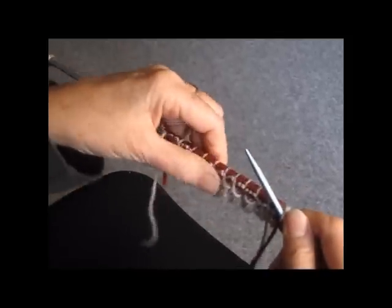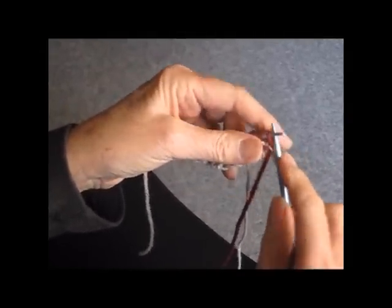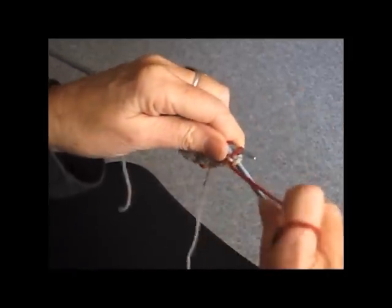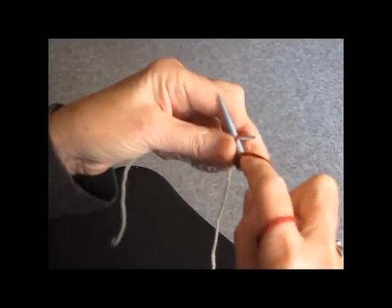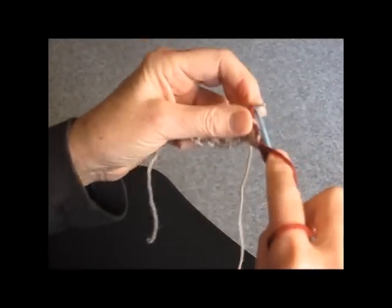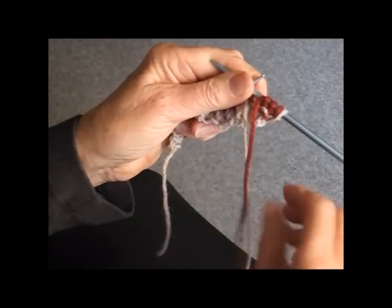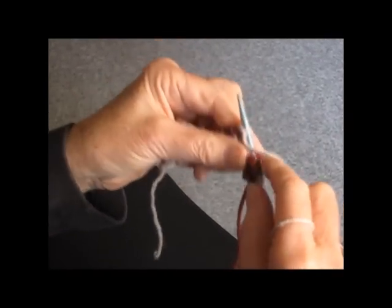Now, on this purl row, we're going to do exactly the same. I've just added another main color stitch there for the purposes of this demonstration. It wasn't there before. So we're going to do three of the second color, which is red, one of the main color, which is tan.